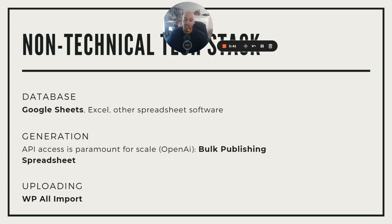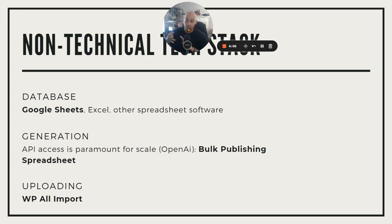The non-technical tech stack I'm using — because I'm not a developer, I'm not a programmer, I don't know enough about Python or JavaScript — means I'm hacking together a few different things. That is: a database where you can house the information, a way to generate the information, and then a way to upload that information. I use Google Sheets. You can use any other spreadsheet software, but I like Google Sheets because it's in the cloud and it's free.